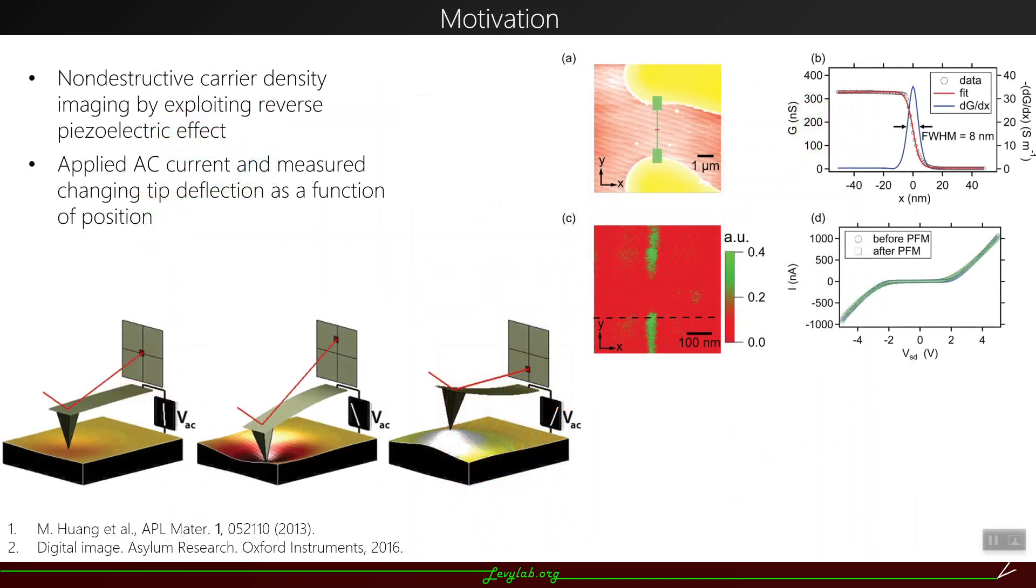We've used this idea of local probes before in our group to non-destructively image the carrier density by exploiting the reverse piezoelectric effect. If you run a current through one of these nanowires, it's going to expand and contract. By using that AC current and measuring the tip deflection of an atomic force microscope tip as a function of position, we are able to create a map of where the nanowire is. The way we'd measure this before would actually cause our nanowires to get ruined, so we don't have to destroy our devices, which is a huge plus.